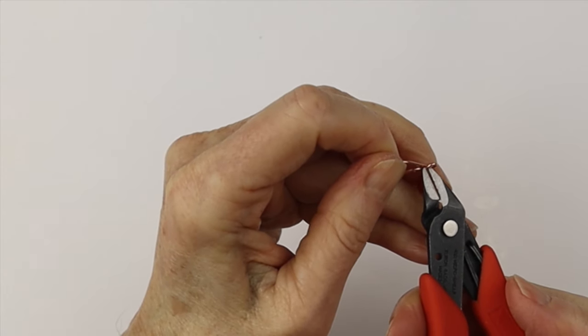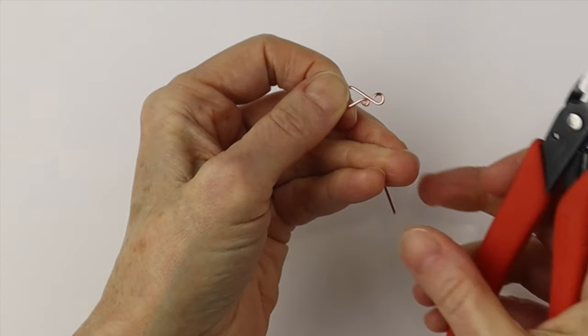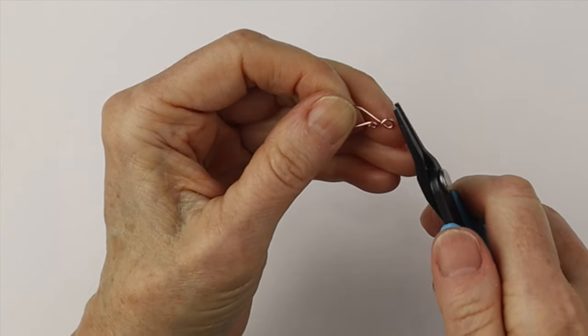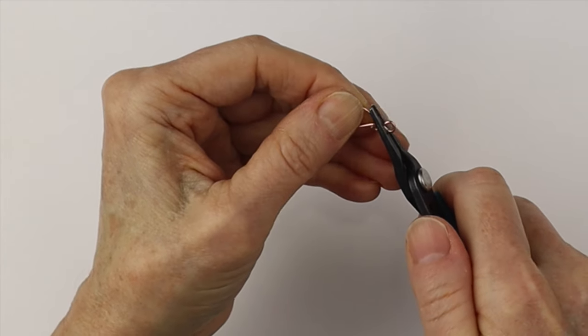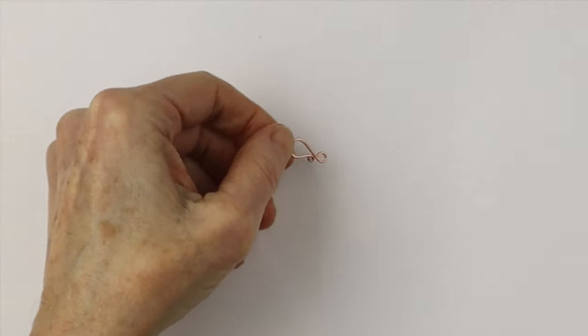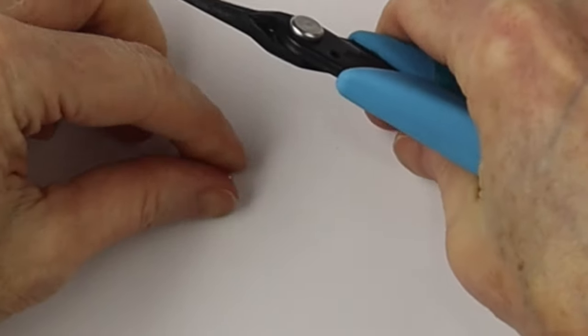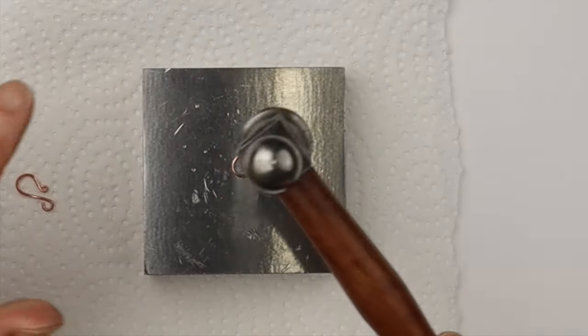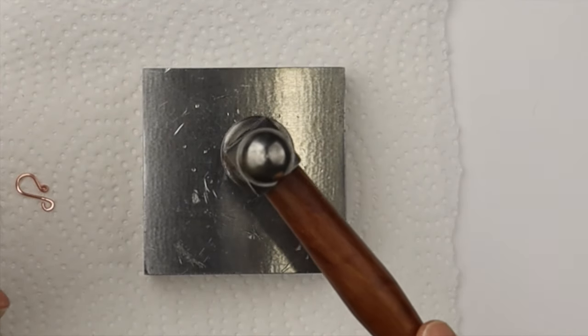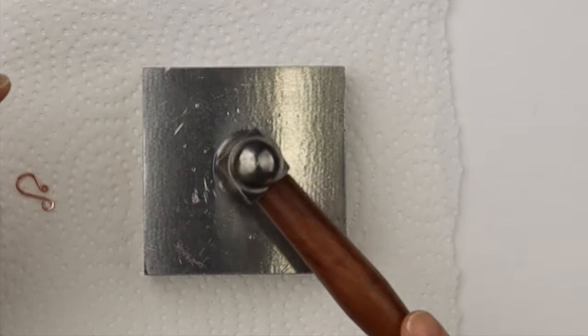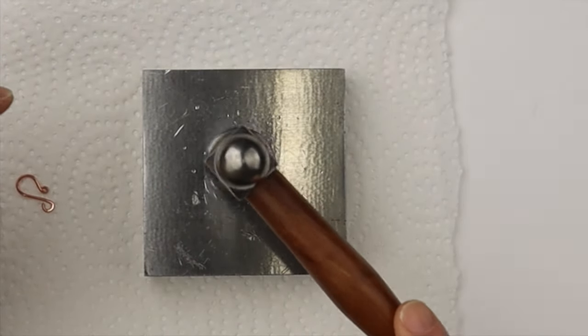Then we're going to cut it flush. This is a very simple style hook. From there we're going to pinch that end down so it's flat. That's our basic hook and loop. Then to flatten it I'm using a steel block and a chasing hammer and I'm just hammering it flat. Just keep turning it over, do a little bit on each side.